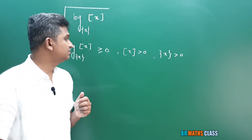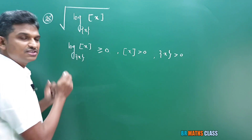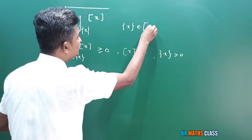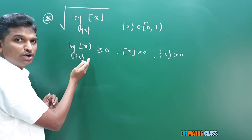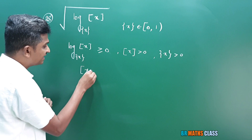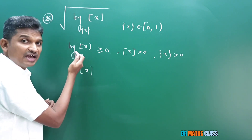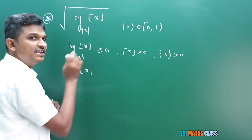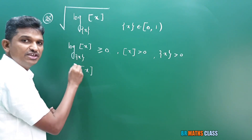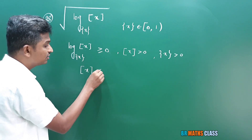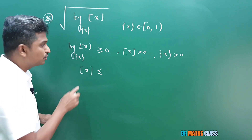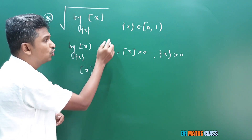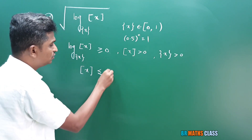We need to find x values satisfying all three conditions. First, consider the logarithm condition. Fractional part of x always lies in the interval [0, 1). Since the base is a value in between 0 and 1, when we take the inequality to the other side, as per the definition of logarithm, 'greater than or equal to' changes to 'less than or equal to'. We get ⌊x⌋ ≤ {x}^0 = 1, since any number between 0 and 1 raised to the power 0 is 1. So ⌊x⌋ ≤ 1.